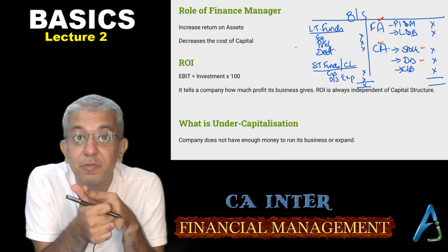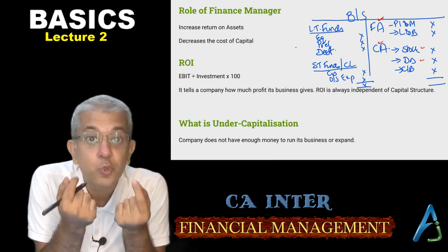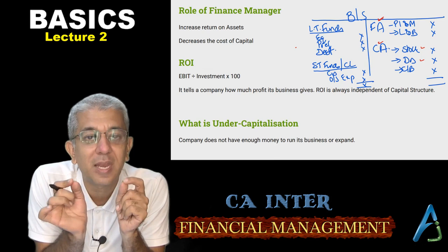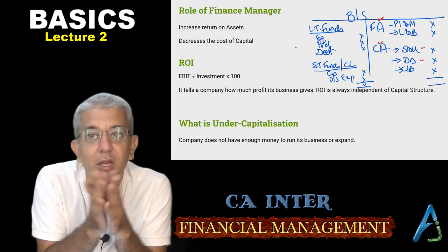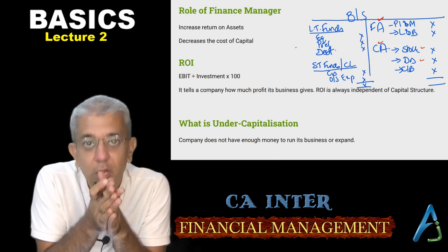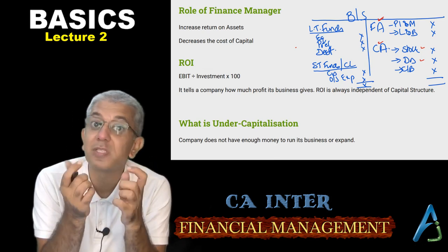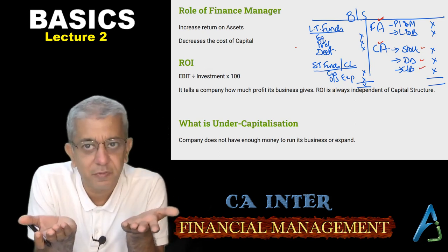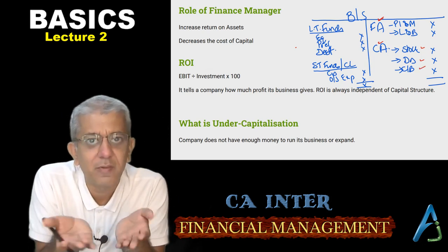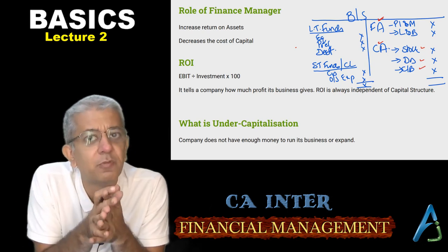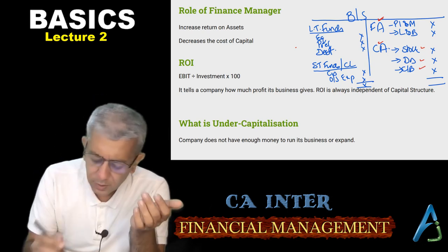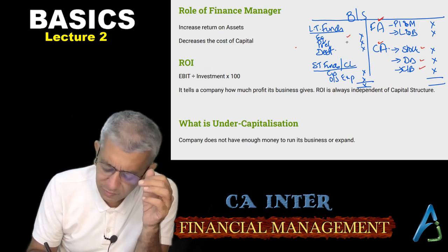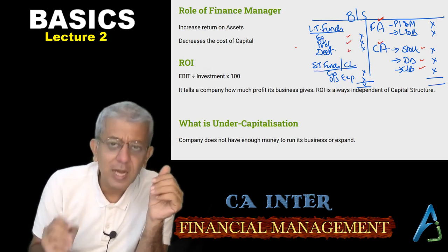Why do debtors come? I produce and sell finished goods, but if I sold them on credit, there will be a credit period. During that time, when my customers are not paying me, there will be debtors. Cash and bank represent whatever funds you have in your bank account or in the form of cash.